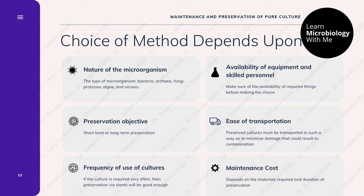The choice of preservation method depends on many factors, including the nature of the organism — whether it is bacteria, fungi, yeast, or any other — availability of equipment and skilled personnel, preservation objective, ease of transportation so that standard strains can be provided without getting contaminated, frequency of use of cultures whether within weeks, months, or years, and finally the maintenance costs depending upon the type of equipment being used.